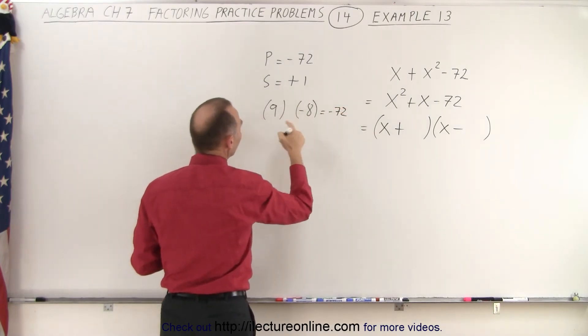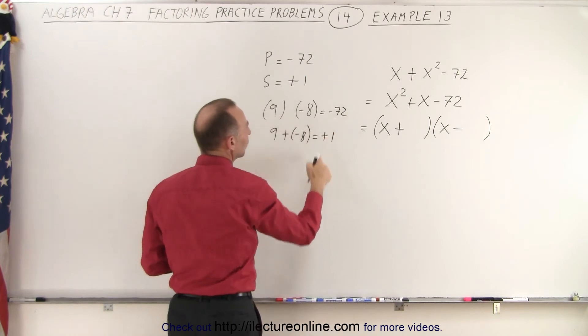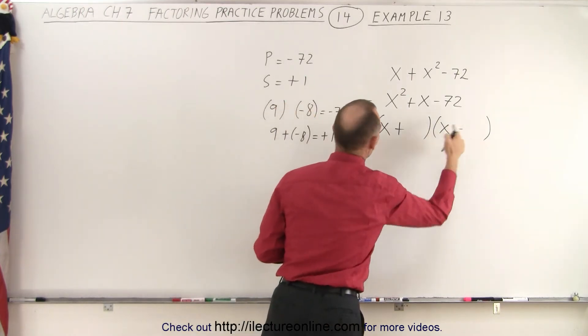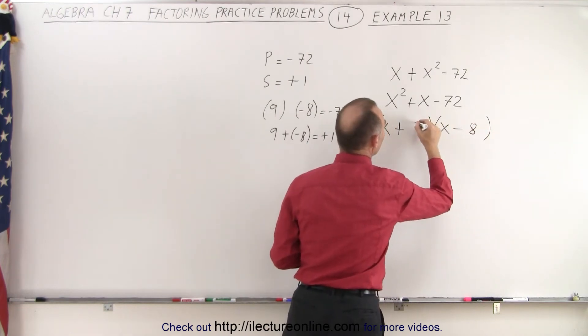And 9 plus a negative 8 gives me a positive 1. So the sum is 1, the product is negative 72. So those are the two numbers that go in here. So this becomes a negative 8 and a positive 9.